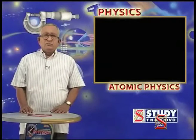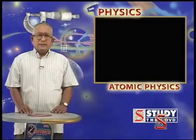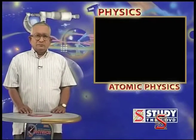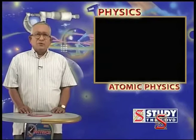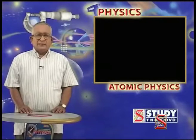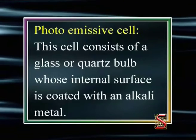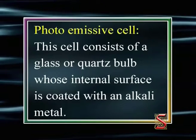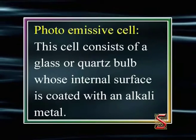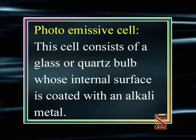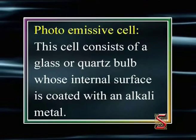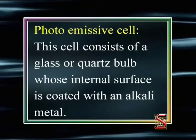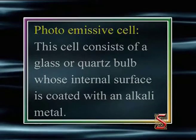Let us now learn the construction and working of photoemissive cells. This cell consists of a glass or quartz bulb whose internal surface is coated with an alkali metal.